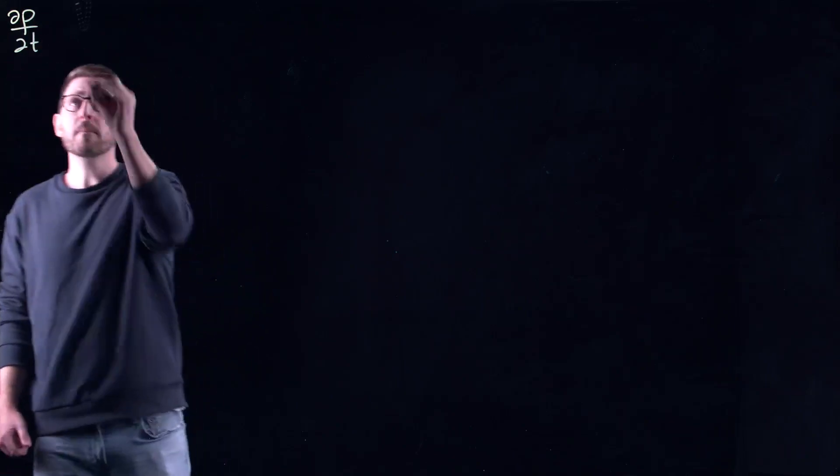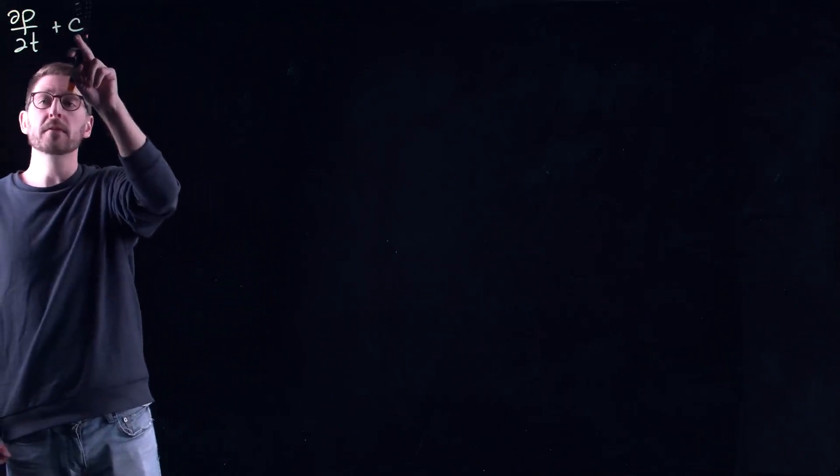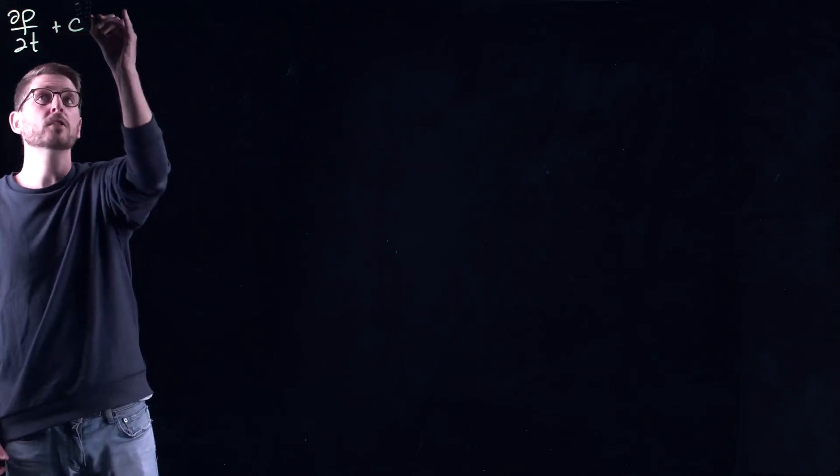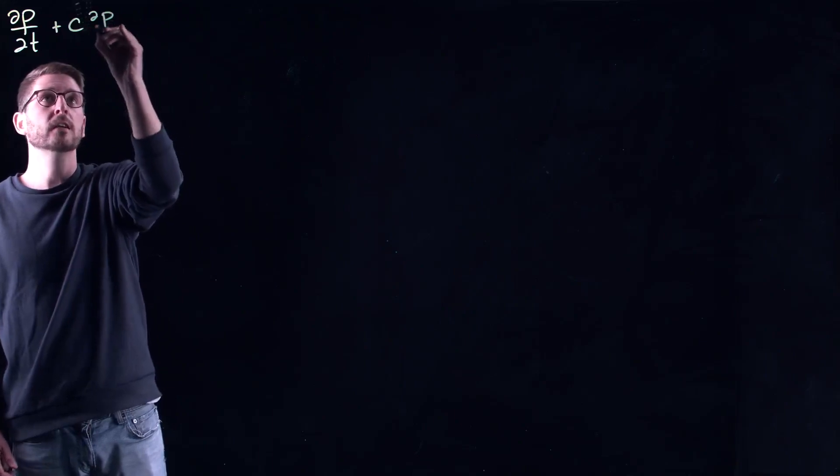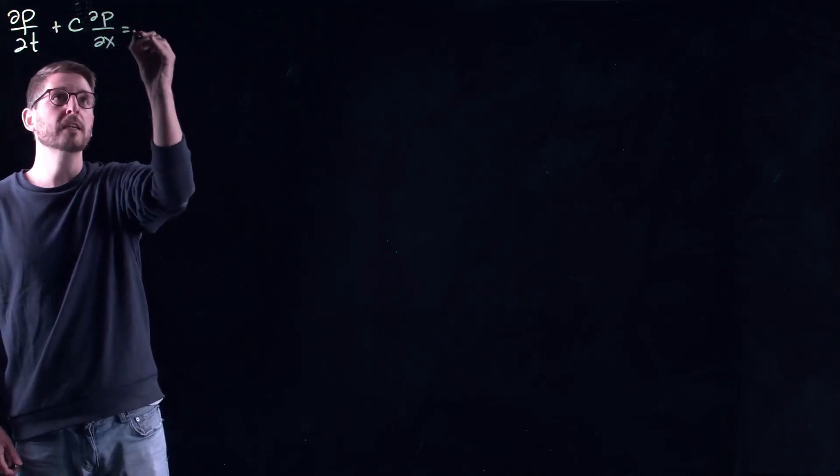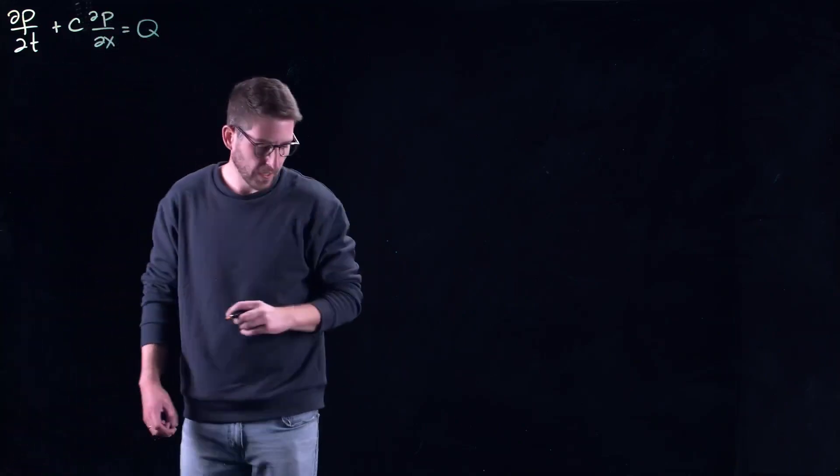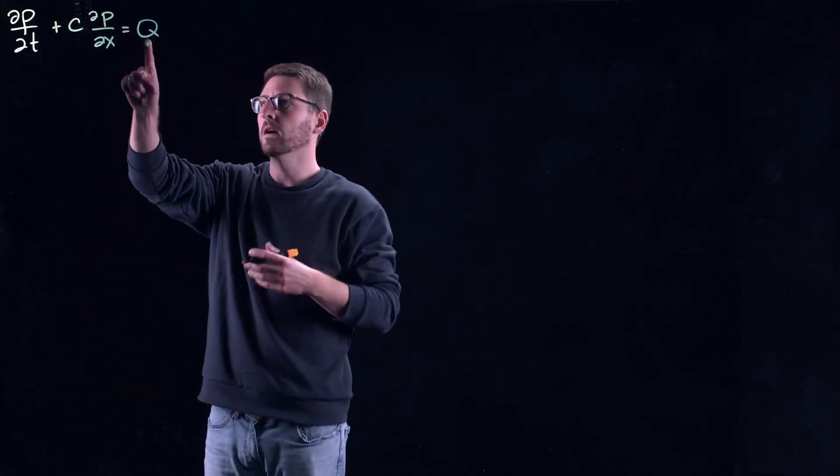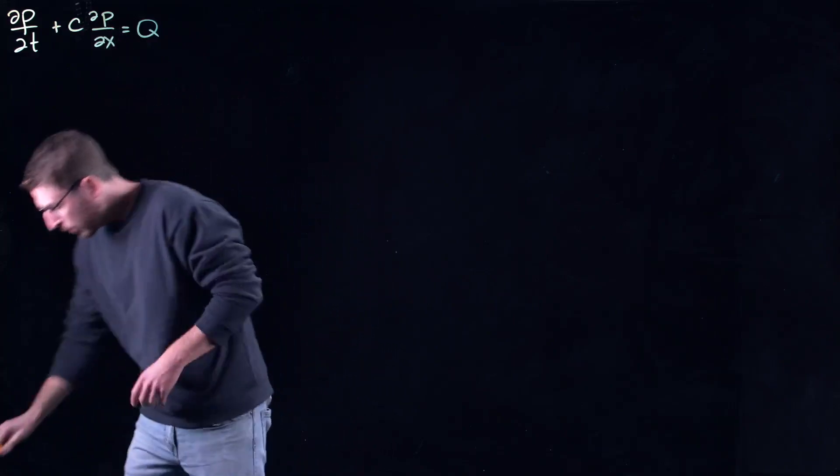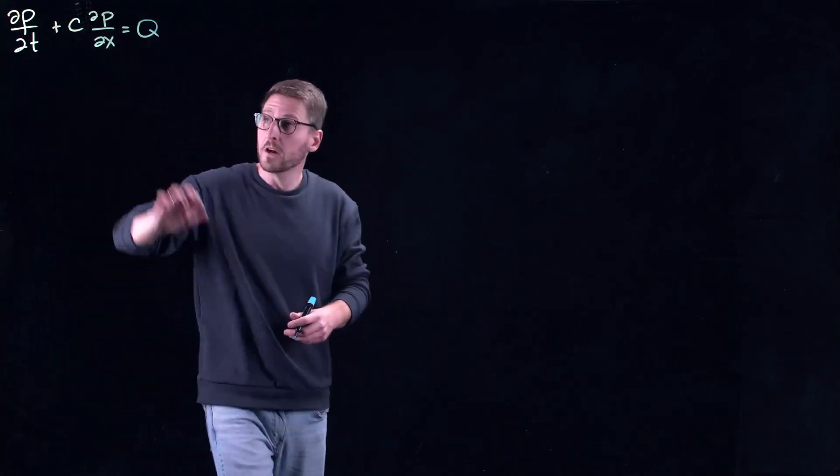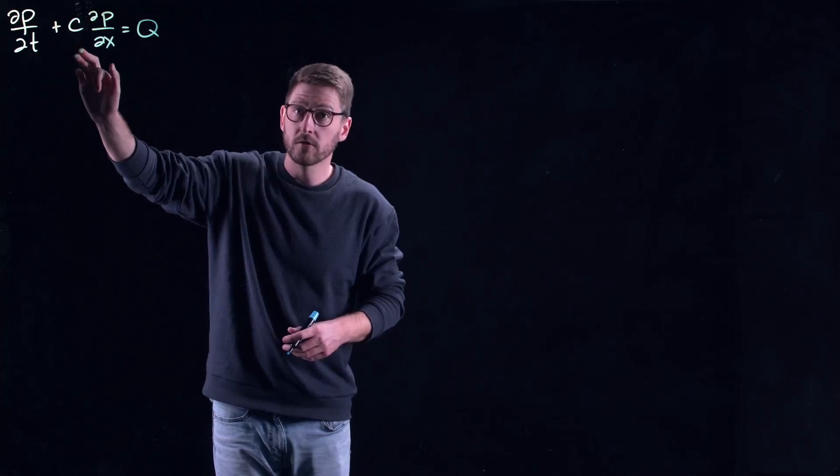What we've really been studying is partial differential equations of this form. They are first order in time. They might have some function maybe of space-time even of p if you wanted to, which is related to the speed along the characteristics. Then they are first order in space and maybe there's some sort of forcing q that could again be for example a function of space or time or the unknown function p. This is what's referred to as a quasi-linear partial differential equation.